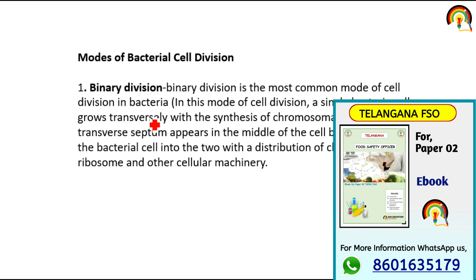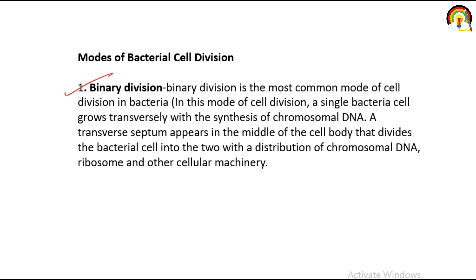The first mode of bacterial cell division is binary fission. In binary fission, there is a formation of daughter cells from the parent cell. A single bacterial cell grows transversely with the synthesis of chromosomal DNA. There is duplication of the DNA, then a transverse septum appears in the middle of the cell body, and cytokinesis occurs with the formation of new daughter cells by distribution of chromosomal DNA, ribosomes, and other cellular machinery.